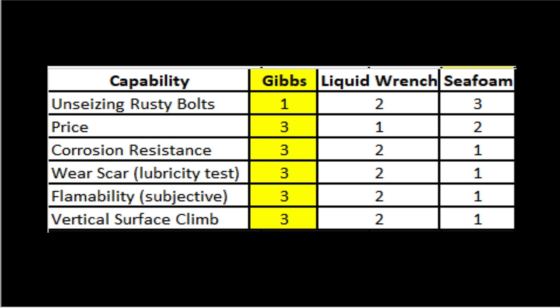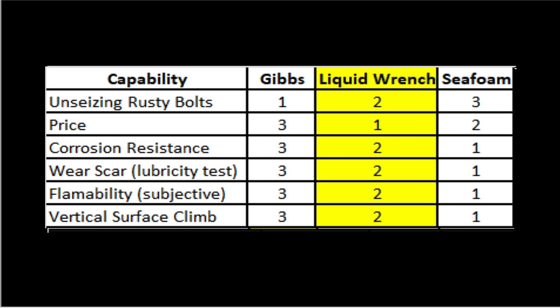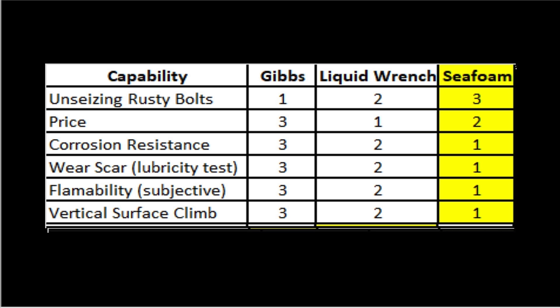There are quite a few factors to consider when buying penetrating oils, and parts of this assessment are highly subjective. Gibbs seems to have the best capability for penetrating the rust, but its ability to penetrate rust seems to hurt it in other categories. Liquid wrench wasn't quite as good at penetrating the rust, but seemed to be slightly better than Gibbs at corrosion resistance, film strength, flammability, and vertical surface climb. While Seafoam finished in third as far as unseizing the rusty bolts, it seemed to beat the other two brands in all the other categories.